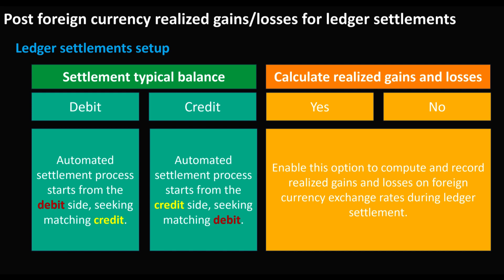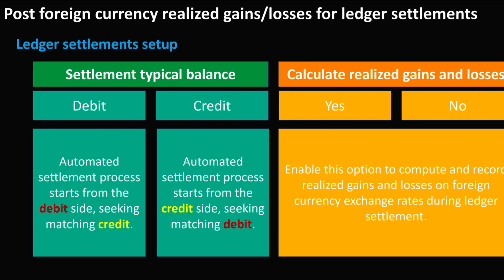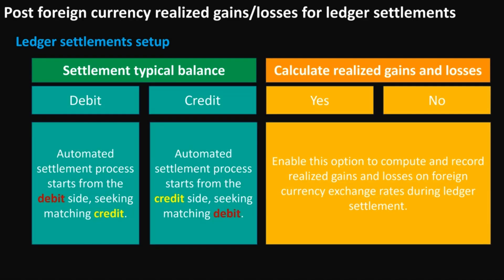The Calculate Realized Gains and Losses option determines whether to calculate and post reporting currency realized gains and losses adjustments during the ledger settlement process. If this option is not selected, realized gains and losses will not be generated by the ledger settlement process. Remember to exclude Accounts Receivable and Accounts Payable summary accounts from the Calculate Gains and Losses option, since foreign currency gains and losses adjustments are typically realized in the subledgers.